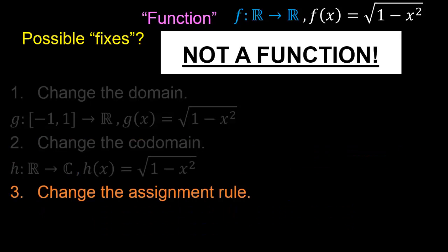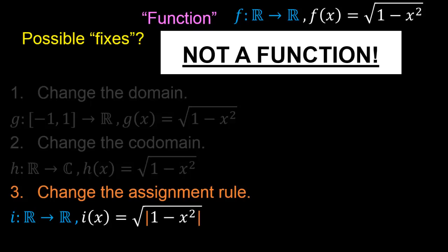A third possible fix is to change the assignment rule. We construct the function i so that it has the same domain and co-domain as f, but now the assignment rule maps each element x in the domain to the square root of the absolute value of 1 minus x squared. Because the expression inside the square root is now always non-negative, we can be sure that i maps every real number to some real number, so i is indeed a function mapping each element in the domain to some single element in the co-domain.